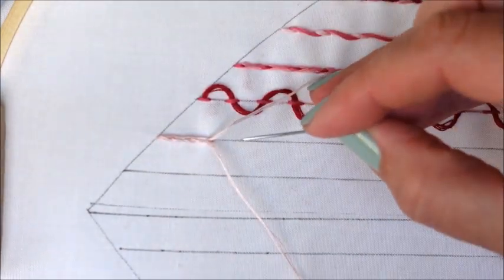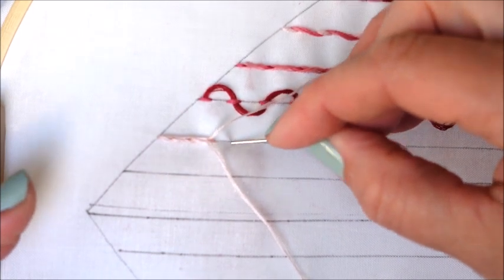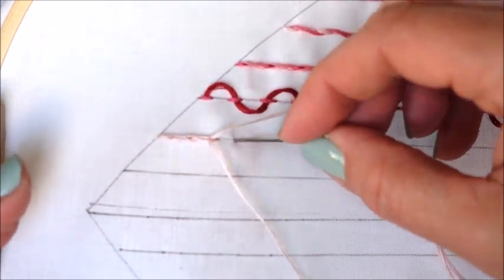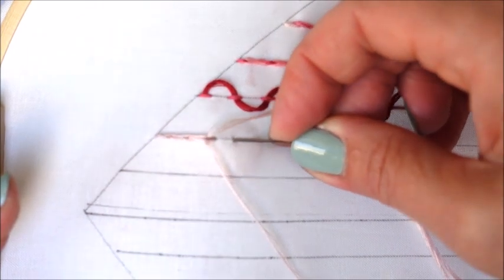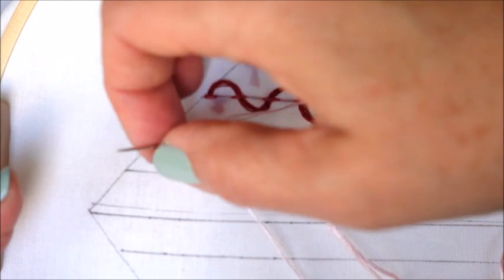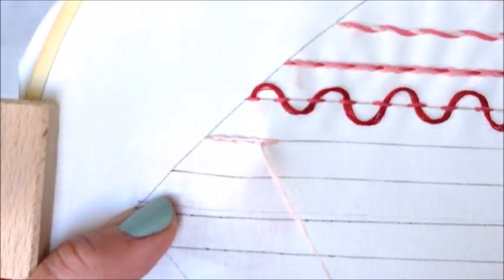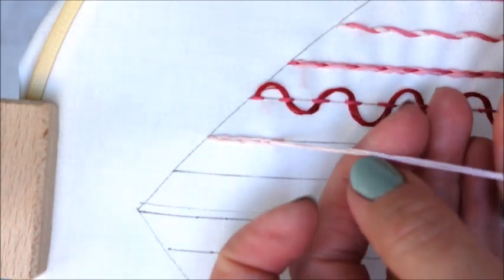So another way you can do it is you can do your stitch in one motion. So you can come forward, bring your stitch back to that first stitch mark, and pull it all through in one motion like that. And that can speed up the process a little bit.